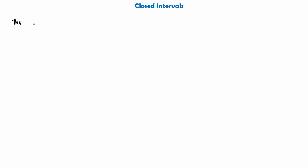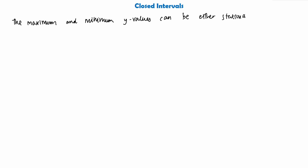So we would call the maximum and minimum y values — these can be either at stationary points, which we have talked about before, and it will be very important for today's video so if you've not checked up on stationary points be sure to do so. They can either be at stationary points or they can also be at the end points of the closed interval. So today we're going to be working out the maximum and minimum y values, which are either the y values of stationary points or at the end points of a closed interval.